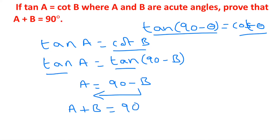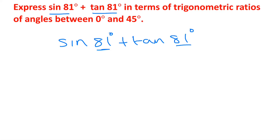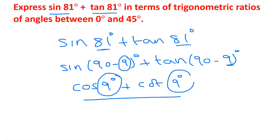Express sin 81 degrees plus tan 81 degrees in terms of trigonometric ratios of angles between 0 degrees and 45 degrees. Since 81 can be written as 90 minus 9 degrees, we write sin 81 as sin(90 minus 9) and tan 81 as tan(90 minus 9). Using sin(90 minus theta) equals cos theta, we get cos 9 degrees. Using tan(90 minus theta) equals cot theta, we get cot 9 degrees. So the expression is expressed with angles in the range of 0 to 45 degrees.